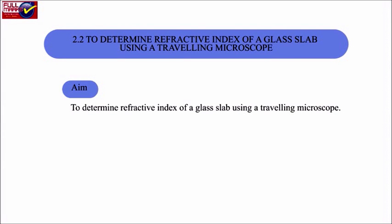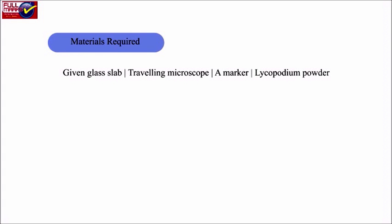2.2 To determine refractive index of a glass slab using a travelling microscope. Aim: To determine refractive index of the glass slab using a travelling microscope. Materials required: Given glass slab, travelling microscope, a marker, lycopodium powder.